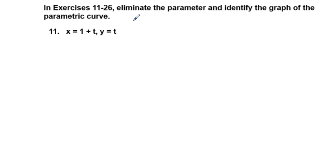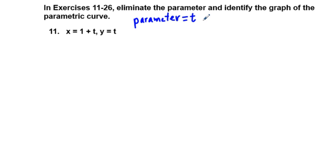On a parametric equation, what is the parameter? Well, the parameter is the variable — the independent variable for both these equations — t. And in eliminating the parameter, we are going to go from a parametric to a rectangular equation. Rectangular means an equation, a graph of just x and y in this case.